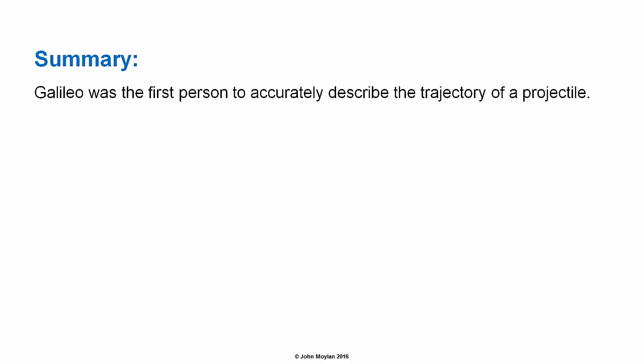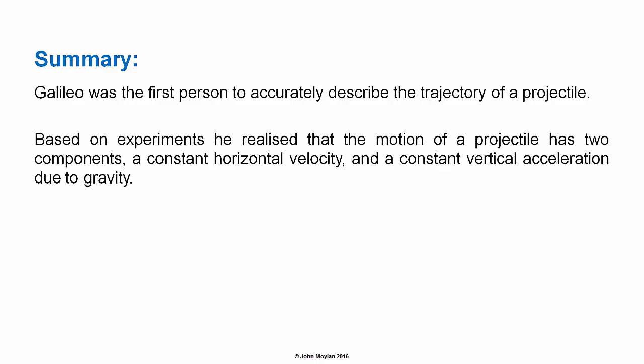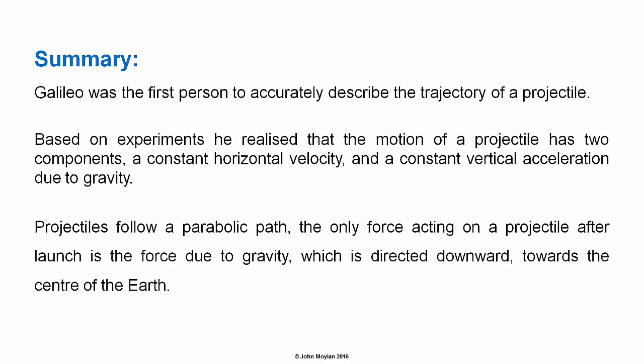In summary, Galileo was the first person to accurately describe the trajectory of a projectile. Based on experiments, he realized that the motion of a projectile has two components: a constant horizontal velocity and a constant vertical acceleration due to gravity. Projectiles follow a parabolic path, and the only force acting on a projectile after launch is the force due to gravity, directed downwards towards the center of the earth.